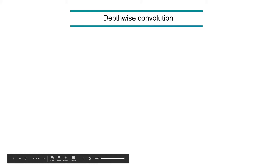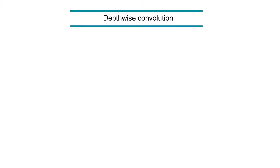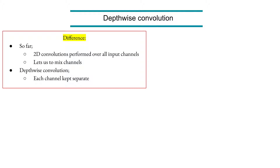Let's take a look at depth-wise convolution, which is a completely different type of convolution operation. So far we were dealing with two-dimensional convolution where the operation was performed over all input channels. That means our kernels were convolved over volumes — tensors — and this approach lets us mix channels by convolving one volume over another volume.